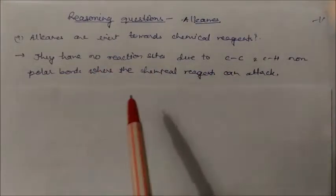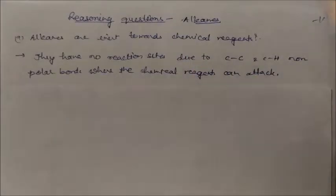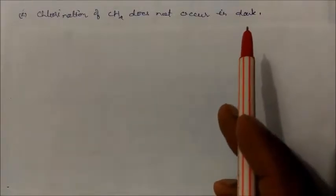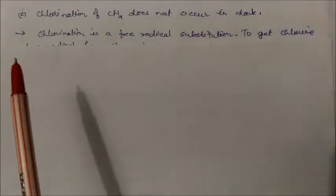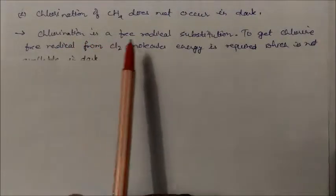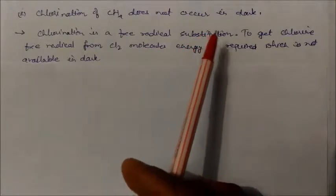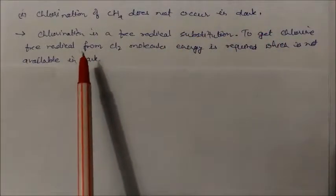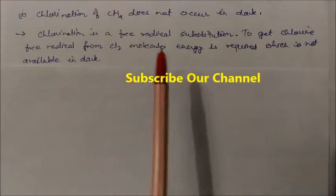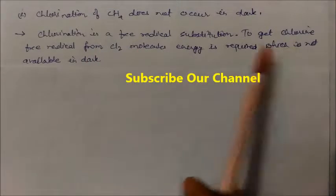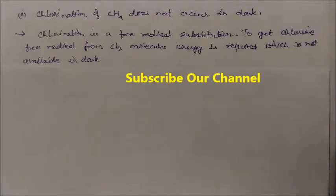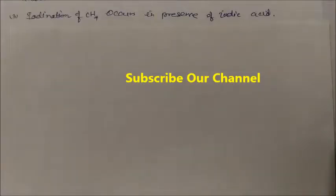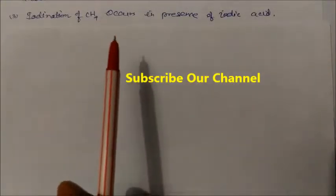Due to the non-polar C-C and C-H bonds, alkanes have no reaction sites. Chlorination of methane does not occur in dark conditions. Chlorination is a free radical substitution reaction, and to get chlorine as a free radical from Cl2 molecules we require a high amount of energy, which is not available in dark conditions.